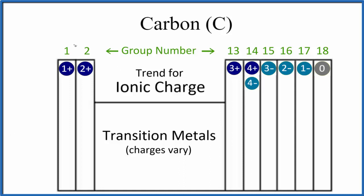We can look at the general trend for the periodic table here. Elements in group 1 form ions that are 1+. Group 2 forms ions that are 2+. We skip the transition metals - their charges can vary.